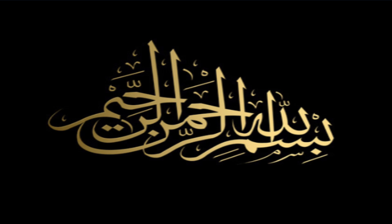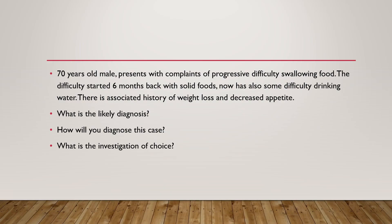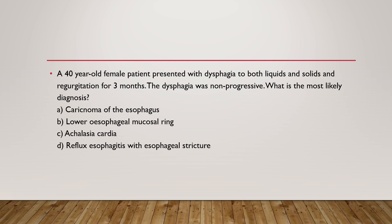Welcome dear students. A 70-year-old male presents with progressive difficulty swallowing food, starting approximately six months ago with solids and now also having difficulty swallowing water, with associated weight loss and decreased appetite. A 40-year-old female presents with dysphagia to both liquids and solids, and regurgitation for three months, but the dysphagia is non-progressive.